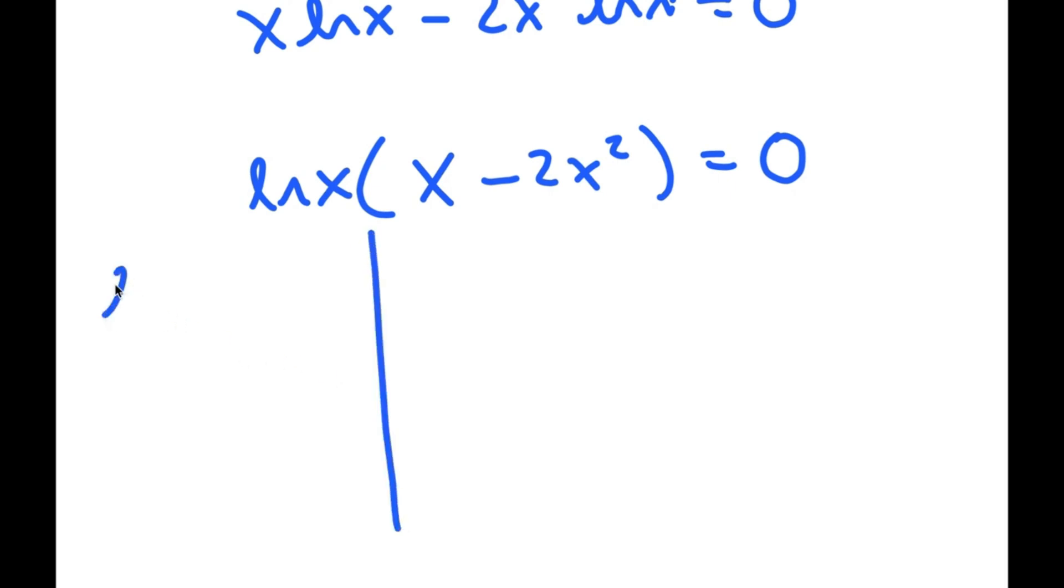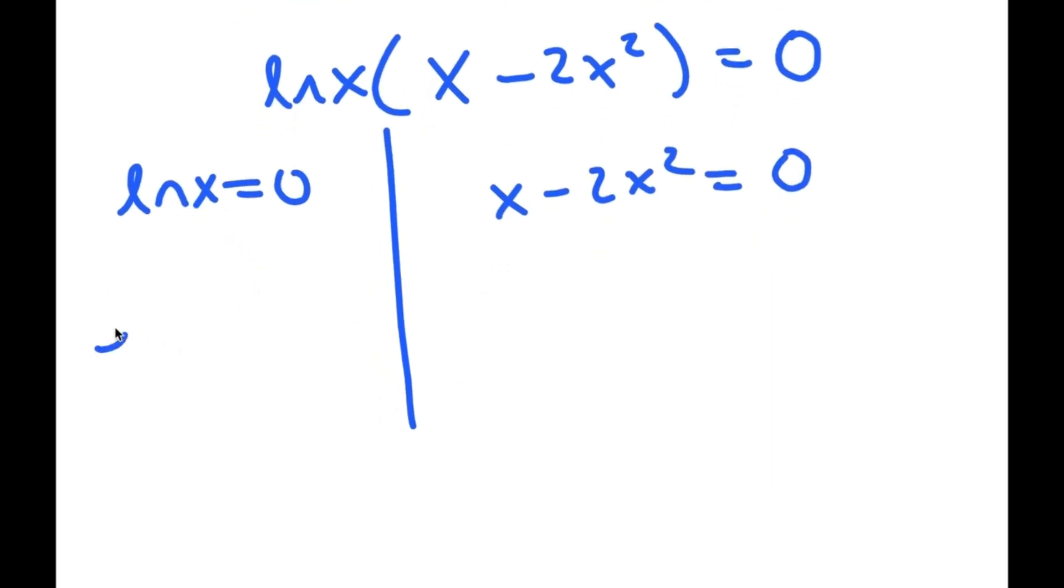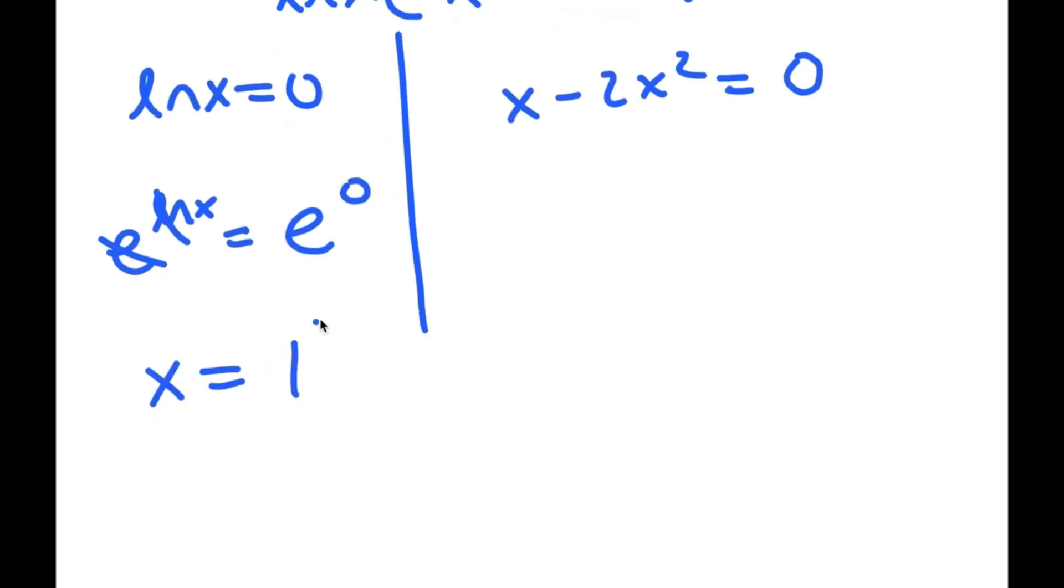So this gives me two equations. I have ln x equals 0, and x minus 2x squared equals 0. For ln x equals 0, I'm going to take e to the power of both sides. So these two cancel out, and I get x is equal to e to the power of 0, which is 1.